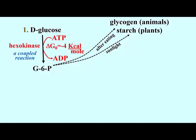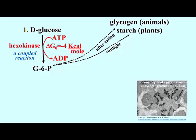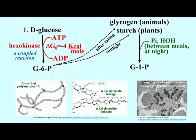Stored glycogen is visible in the electron microscope as electron-dense granules, such as those seen in the micrograph in the lower right. Between meals, or at night in the dark in plants, glycogen or starch is hydrolyzed to release glucose 1-phosphate, which is in turn converted back to glucose 6-phosphate by the enzyme phosphoglucomutase. Mutases are enzymes that catalyze the transfer of functional groups, often phosphates, from one carbon to another in the same molecule.